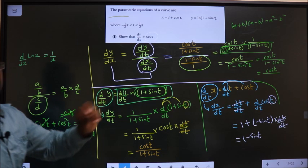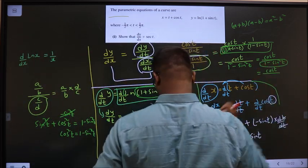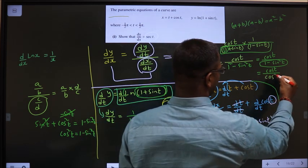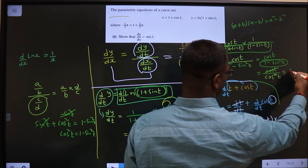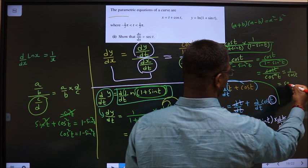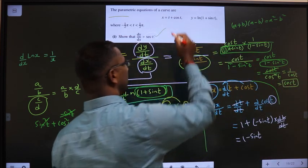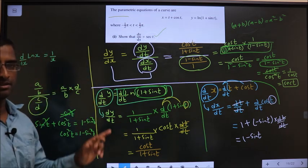Let us replace it here. So in place of 1 minus sin square t, I write cos square t. Now this and the square gets cancelled left out with 1 by cos t. 1 by cos t is nothing but secant t. Thus we got what he told us to get. Clear with this method? Fine.